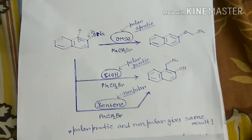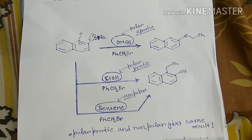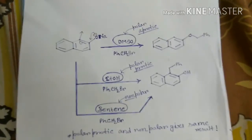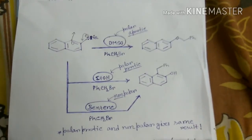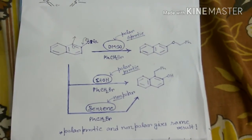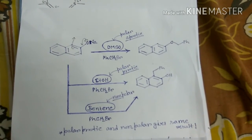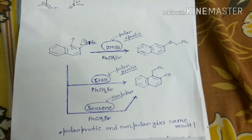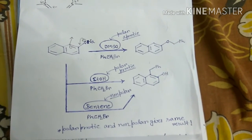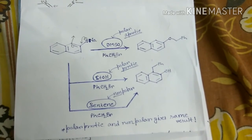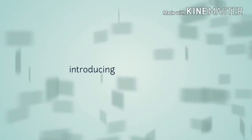To summarize: in polar aprotic solvents like DMSO or DMF, O-alkylation occurs; in polar protic and non-polar solvents, C-alkylation is the major product. I hope you enjoyed the video. If you liked it, please subscribe to my channel for the latest updates and share it so your friends can benefit too. Thank you.